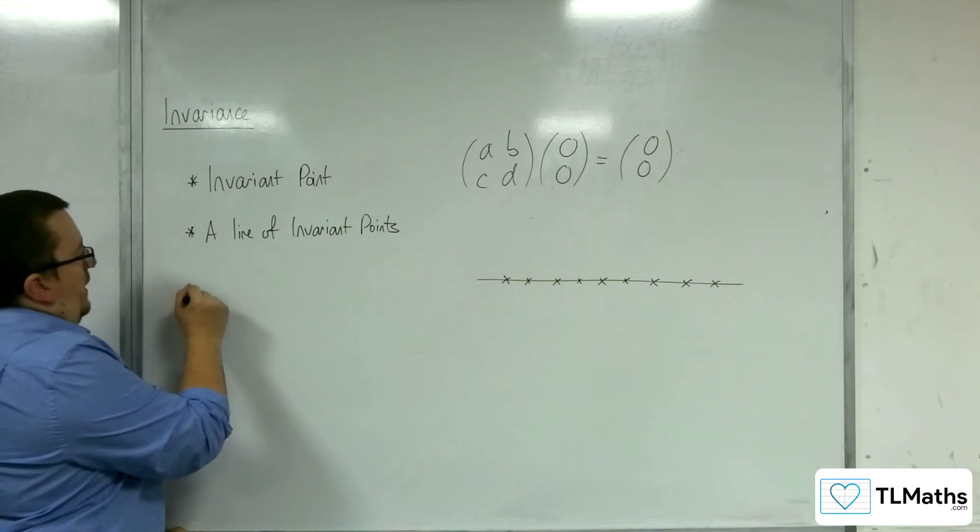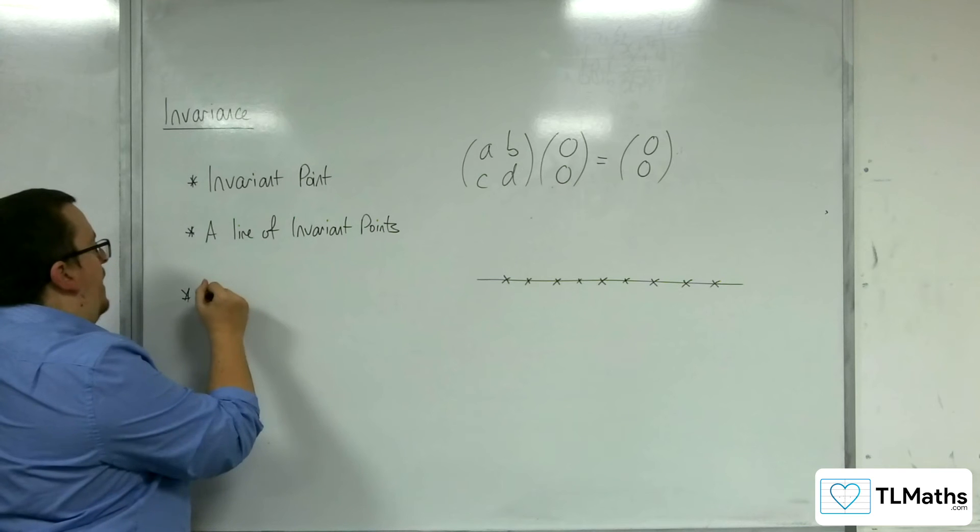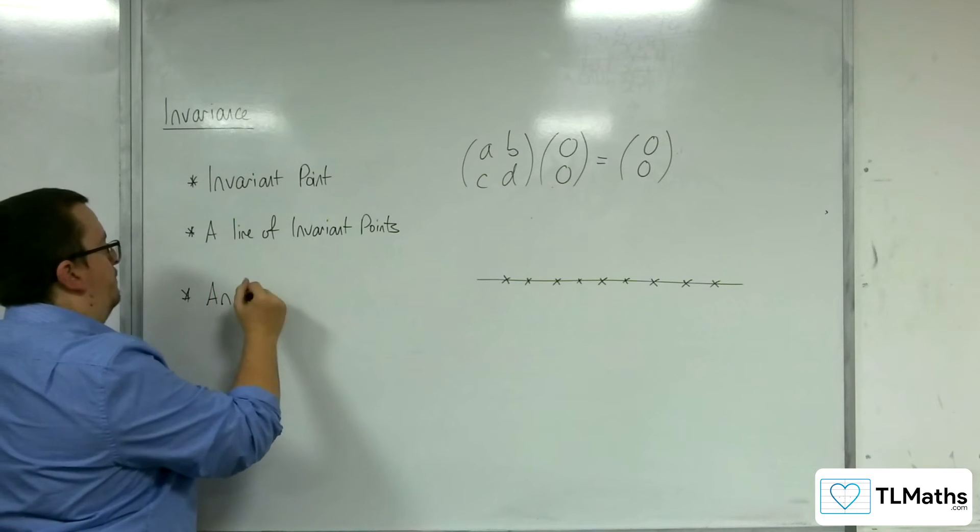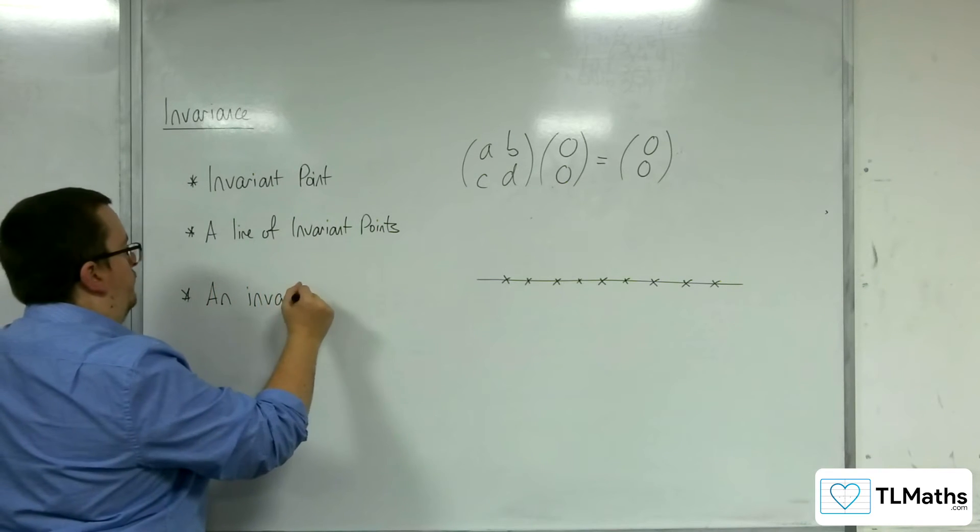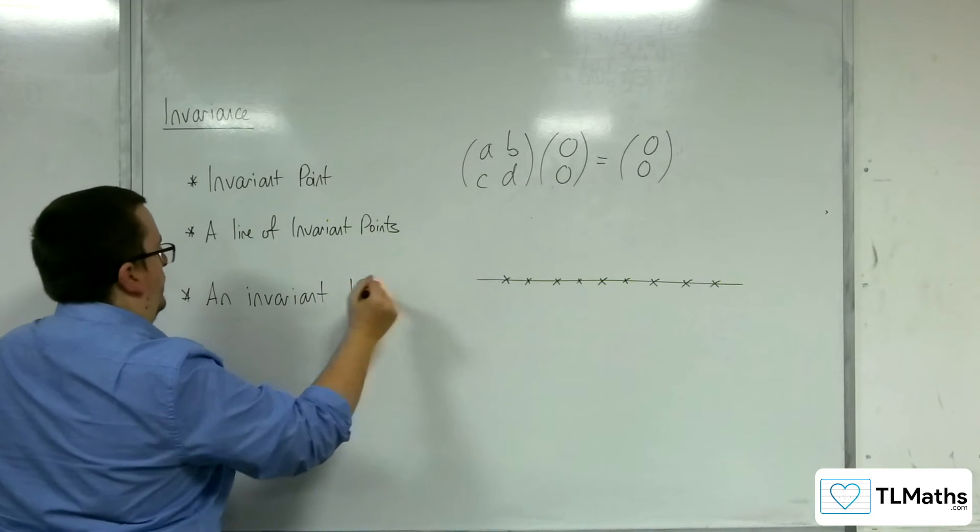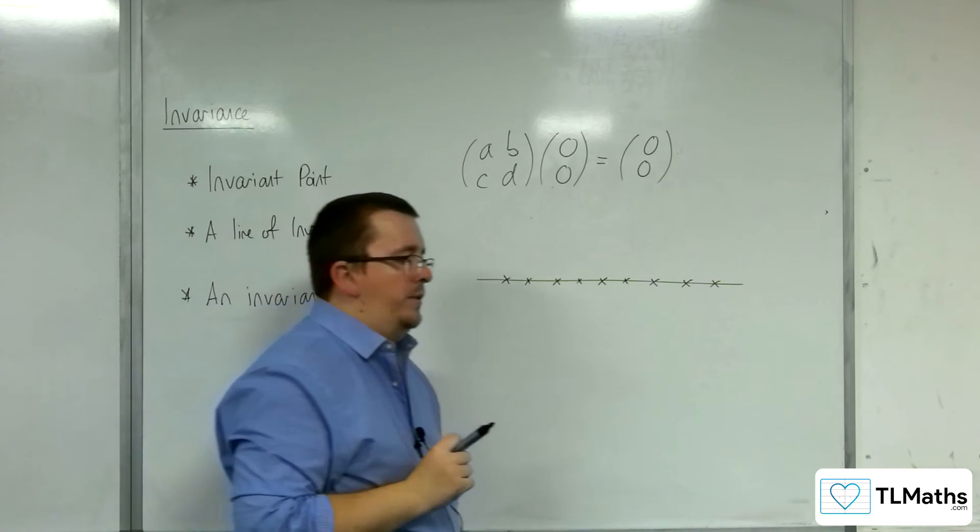Then, the last situation is an invariant line. Now, this is different to a line of invariant points.